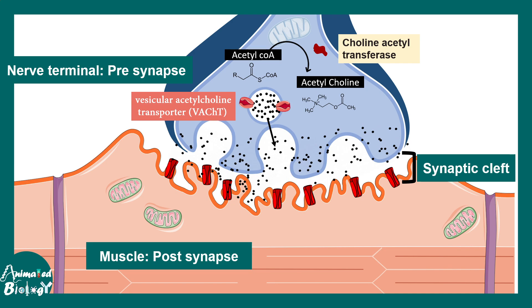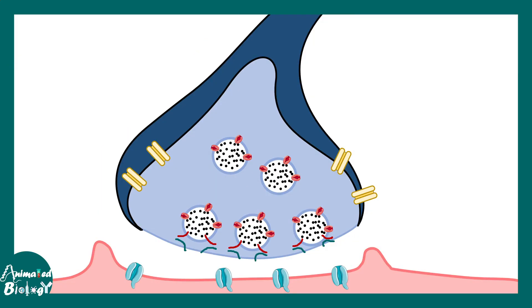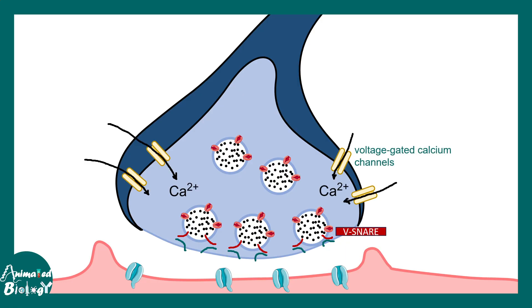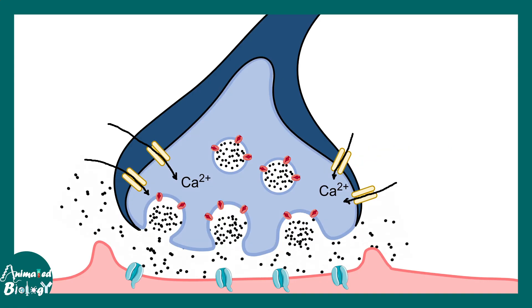When the vesicle fuses due to an action potential, there is fusion via V-SNARE and T-SNARE proteins. When the action potential reaches the synaptic terminal, there is a large calcium influx. Elevation of calcium triggers V-SNARE and T-SNARE fusion, leading to vesicle release, and acetylcholine is released into the cleft between the presynaptic motor terminal and the muscle. Acetylcholinesterase can also clear the extra acetylcholine after some time.